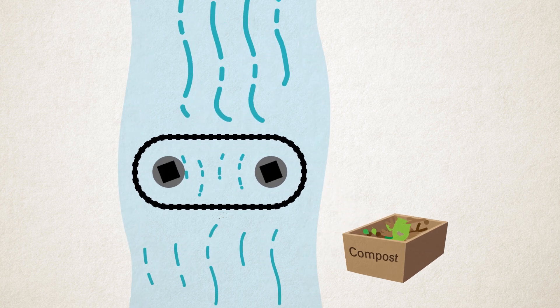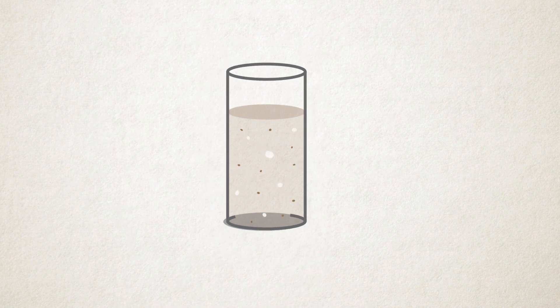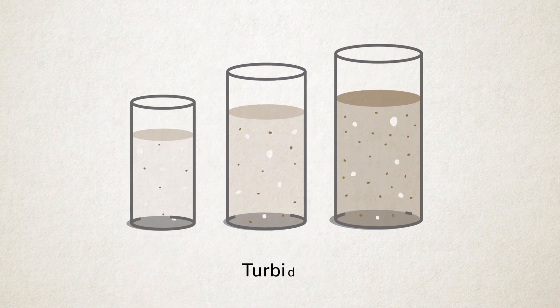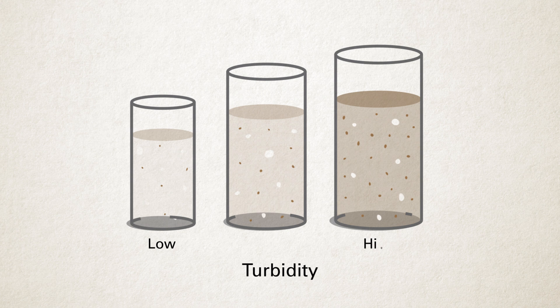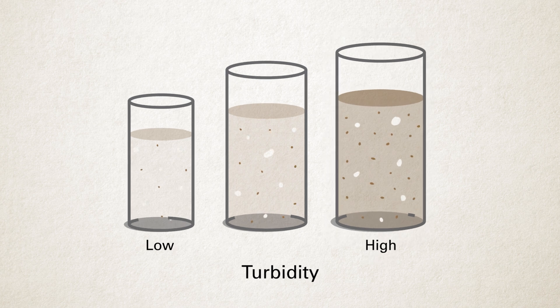But some particles like clay and tannins are so small that they stay in suspension or are dissolved in the water. We can tell how many of these particles are in the water by measuring its turbidity. Turbidity is the cloudiness of the water — the cloudier the water looks, the more turbid it is.